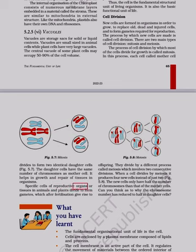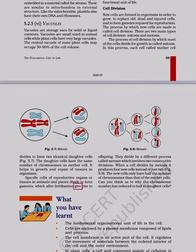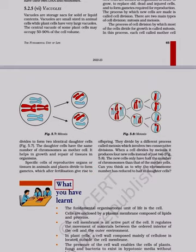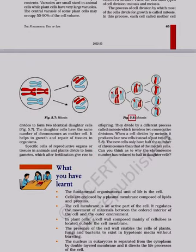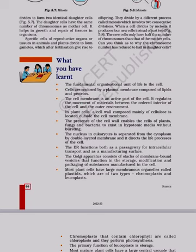Specific cells of reproductive organs or tissues in animals and plants divide to form gametes, which after fertilization give rise to offspring. They divide by a different process called meiosis, which involves two consecutive divisions. When a cell divides by meiosis it produces four new cells instead of just two, as shown in Figure 5.8. The new cells only have half the number of chromosomes compared to the mother cells. Can you think as to why the chromosome number has reduced to half in daughter cells?